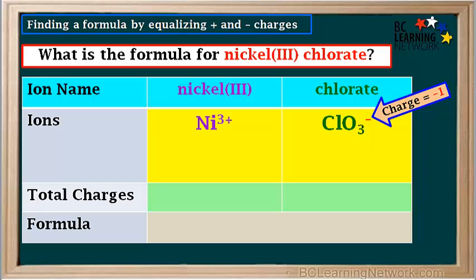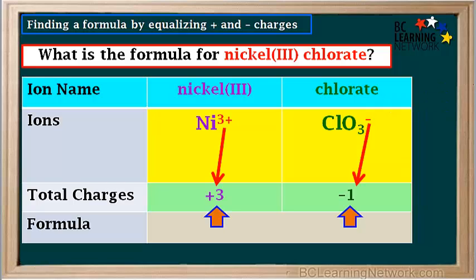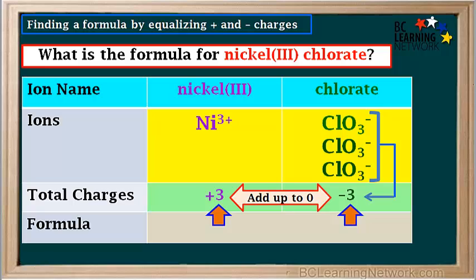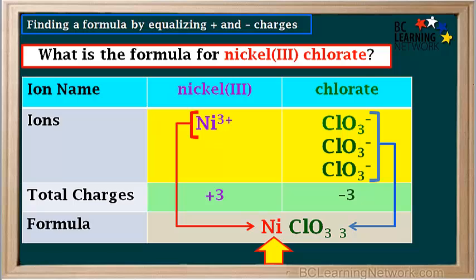We see that the two charges are not equal and opposite — they do not add up to zero. In order to equalize the positive and negative charges, we add two more chlorate ions, so that we have three chlorate ions altogether. Each chlorate ion is a single unit with a charge of negative one, so the total negative charge is 3 times negative one, which is negative three. The total charges are now equal and opposite: positive three and negative three add up to zero. So we count the number of each kind of ion to get the formula.